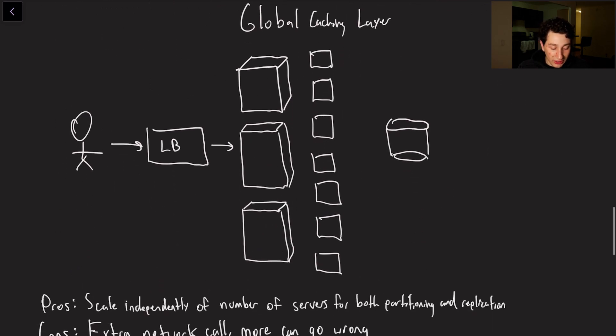Which is using a global caching layer. So as you can see that caching layer would be this guy right here. And when you hit an application server, it could potentially reach out to any of those caches, which is good because it means that you don't necessarily have to rely on consistent hashing as much.